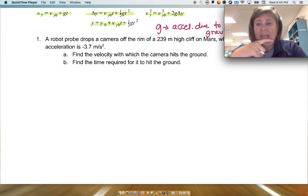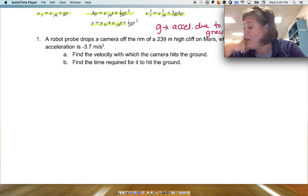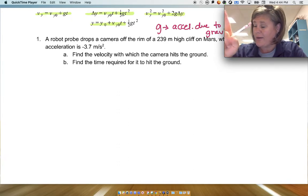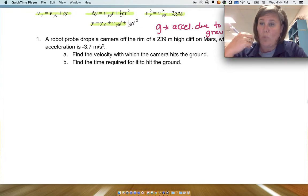And we know that with freely falling objects, we have uniform acceleration. That's a big thing. So a robot probe drops a camera off the rim of a 239-meter-high cliff on Mars, where the free-fall acceleration is -3.7 meters per second squared.